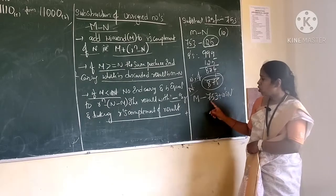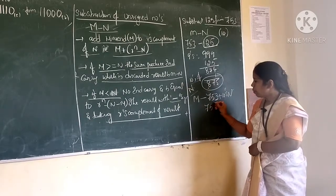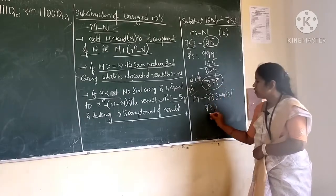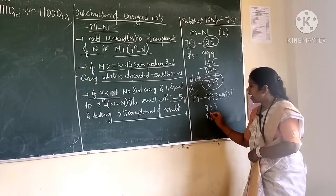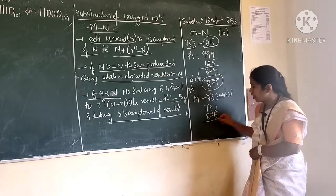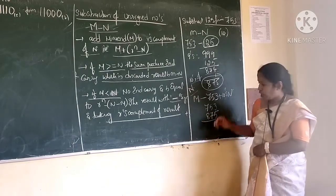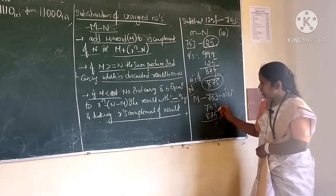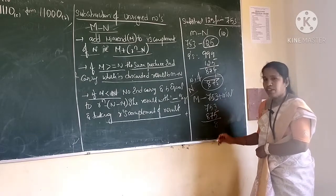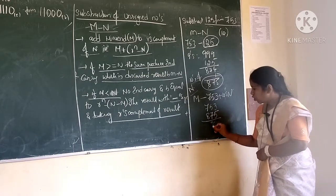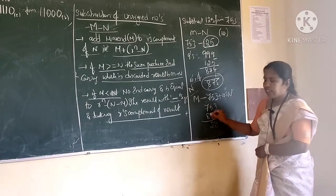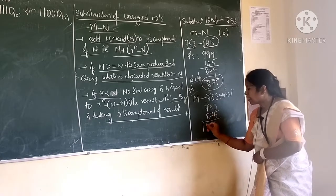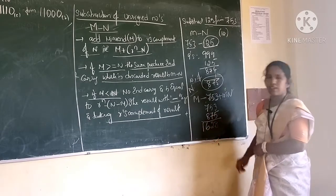So m is 753, plus 10's complement of n which is 875. Doing the addition: 3 plus 5 is 8, 5 plus 7 is 12 (write 2, carry 1), 7 plus 8 plus 1 carry is 16.